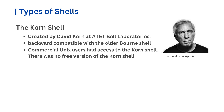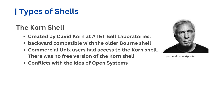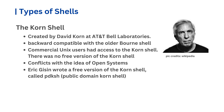Commercial Unix users had access to the Korn shell, but users of free Unix versions did not because there was no free version. This created problems because scripts written for the Korn shell wouldn't work on free versions of Unix. Many organizations used both commercial and free Unix versions, leading to issues where a script worked on one system but not another. To help solve this problem, Eric Gissen wrote a free version of the Korn shell called PDKSH, the public domain Korn shell, which became popular.